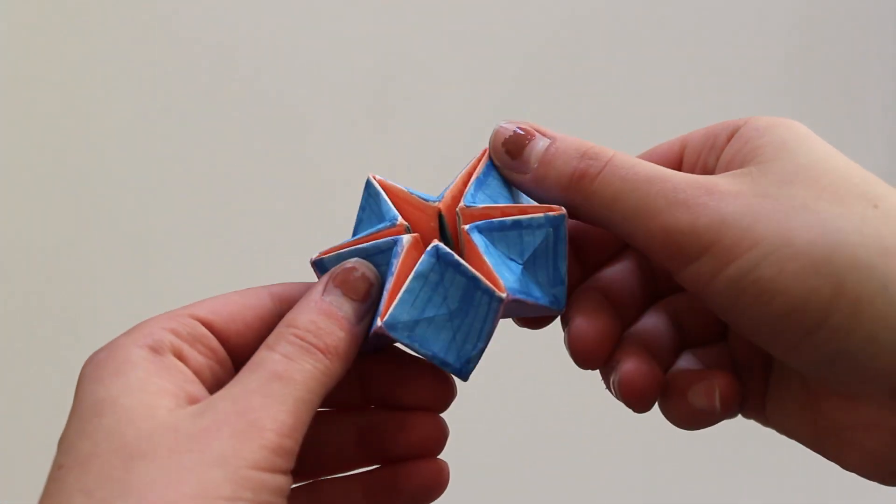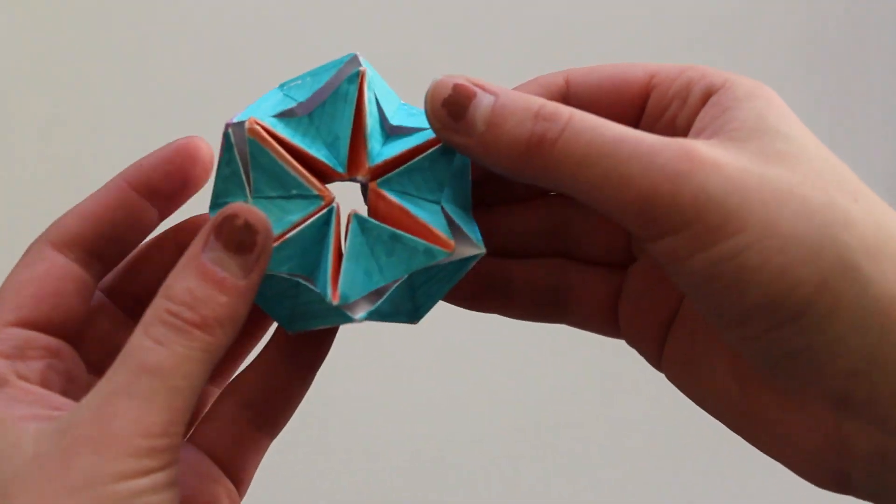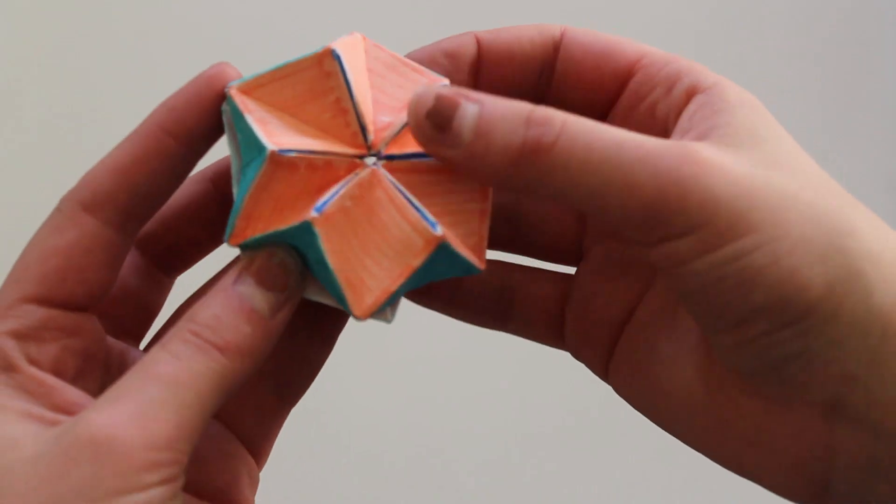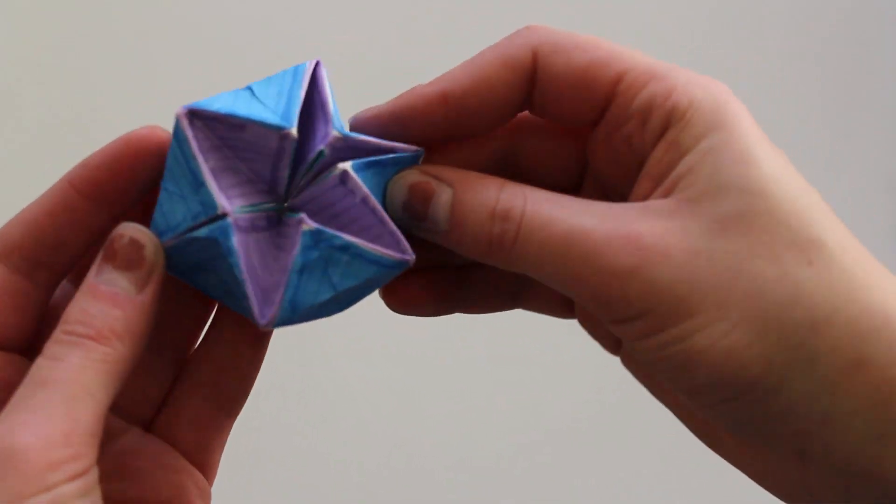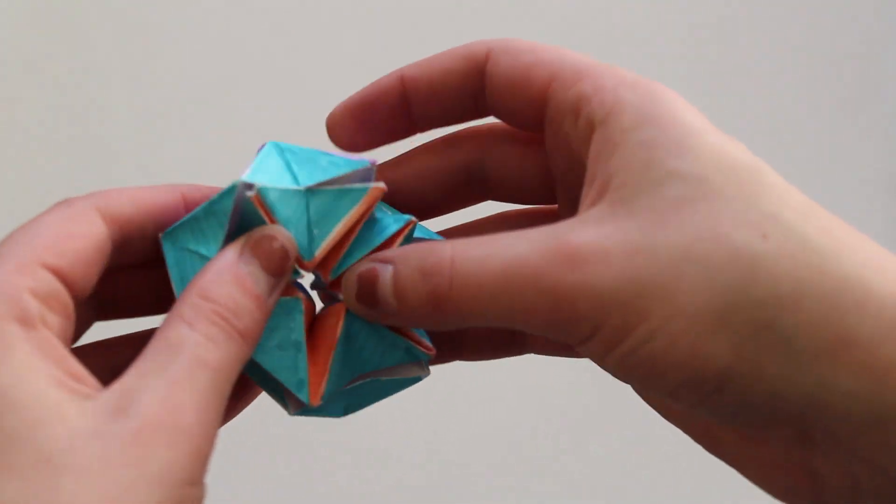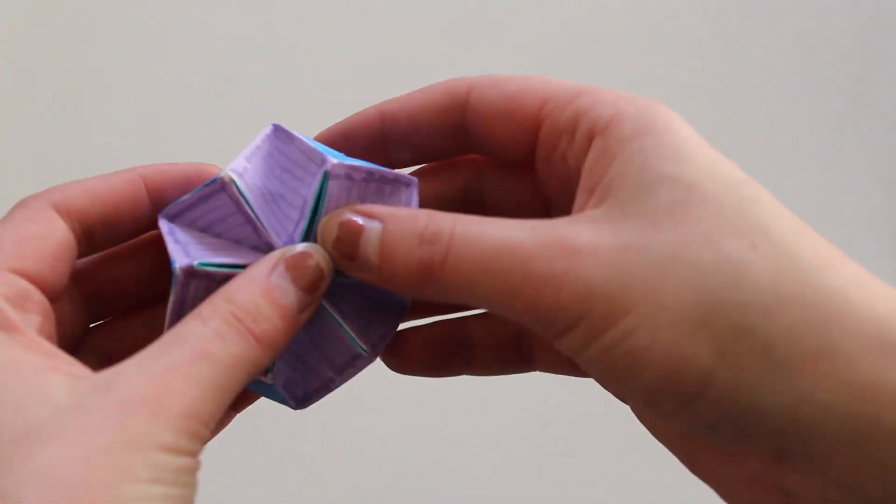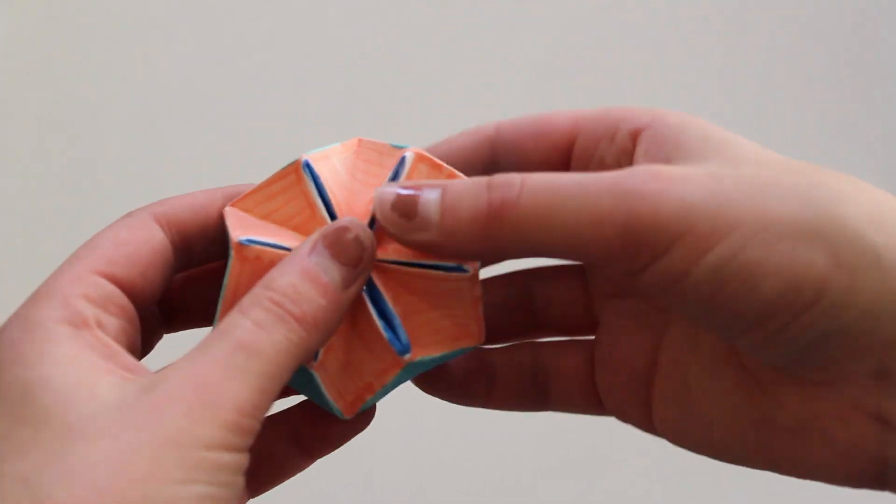Welcome everybody to the first installment of Math Crafts where we make a fun math craft. Today we'll be learning how to make this bad boy called the hexahydroflex. It's a pretty nifty craft that I made at my math group recently. It's a little bit tricky, so if you fail the first time that's okay, I did too.